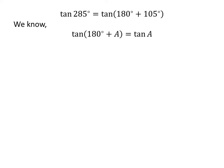We know the trigonometry identity tangent of 180 degrees plus A is equal to tangent of A. The proof of this identity is explained in the video appearing in the upper right corner, and the link is also given in the description section. So, tangent of 285 degrees is equal to tangent of 105 degrees.